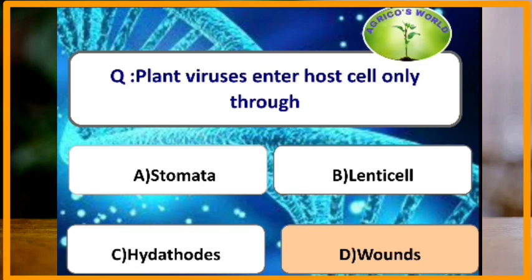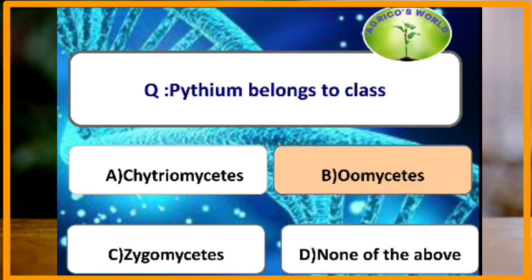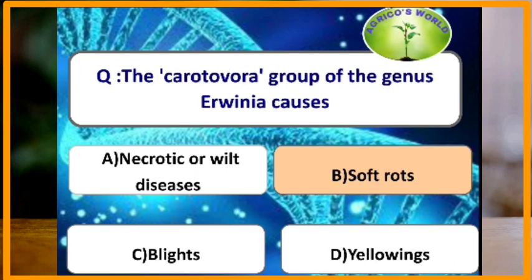Plant viruses do not have machinery by themselves to enter the host cell, so they enter through wounds. Sugarcane mosaic virus is under the genus Potyvirus. Pythium belongs to the class Oomycetes. The carotovora group of the genus Erwinia causes soft rots.